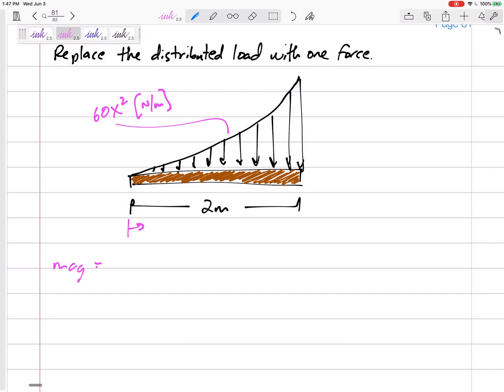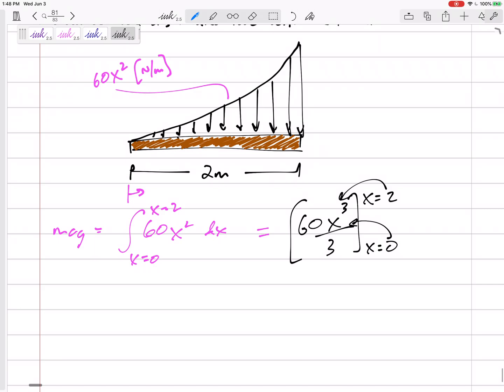So here the magnitude is going to be the integral of 60x squared. We're integrating it with respect to x as x goes from 0 to 2. So this is going to be pretty easy. The integral of 60x squared, what do I do when I take integrals? I add 1 to the exponent divided by the new exponent, so really 20x cubed, and if I want to evaluate this from 0 to 2, plug in 2, and then subtract. What happens when I plug in 0? I get nothing. So this magnitude would be 160 newtons.